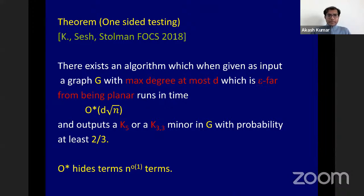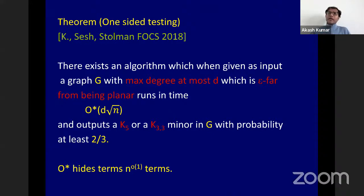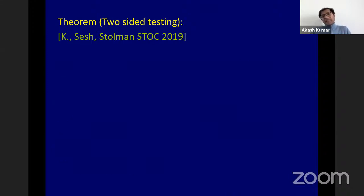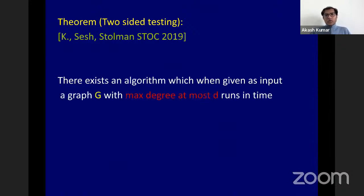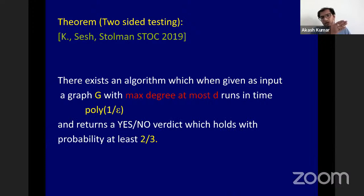A question: how many vertices are queried in the adjacency list? The number of vertices queried will be roughly d times root n — of the same order. For the two-sided variant, there is an algorithm which on input a bounded-degree graph runs in time polynomial in 1 over epsilon and outputs the correct verdict — whether the graph is planar or far from planar — with good probability.